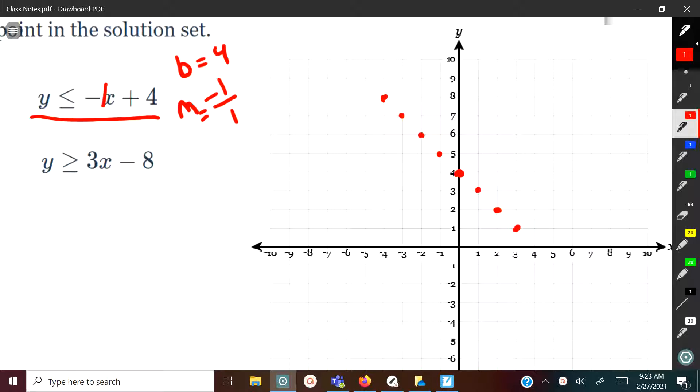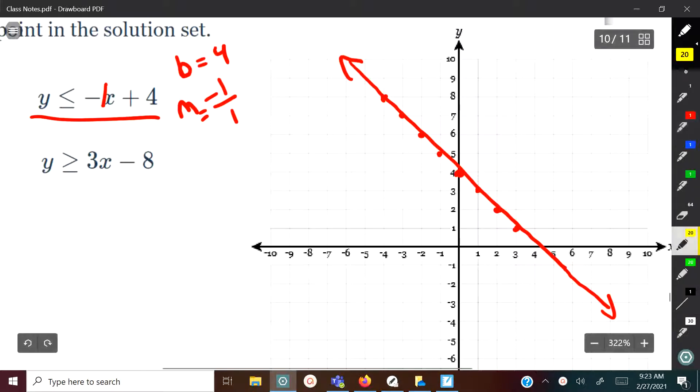Now, the next thing you want to do is draw your line. So remember that if it's equal to, you want to have a solid line. So we're going to draw a solid line. Now since it's less than, you're going to shade below. But before we shade below, I am going to graph the other line.